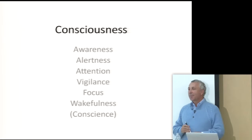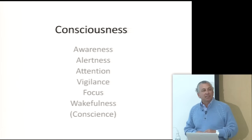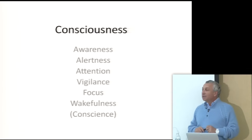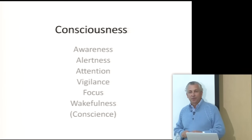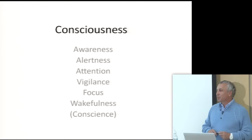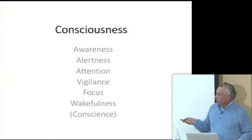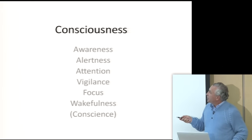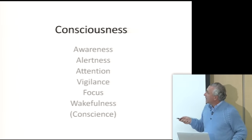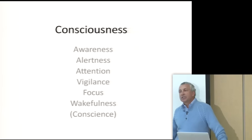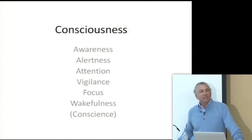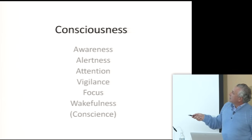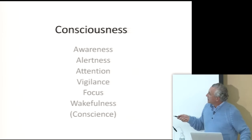I've been studying this from a mathematical perspective that is not yet fully published, but I'd like to share some of these aspects. First, let's look at what consciousness is. We have terms like awareness, alertness, attention, vigilance, focus, and wakefulness — these are all aspects of consciousness. The definition of consciousness involves the factors that make it exist: it's the ability to be conscious of something. What is the difference between consciousness and awareness? We'll come back to that.